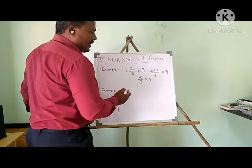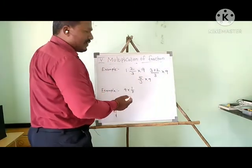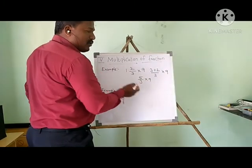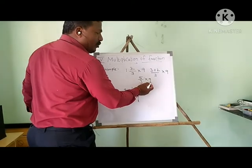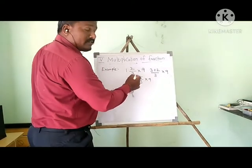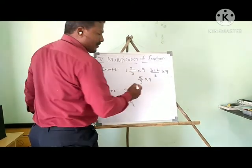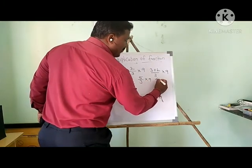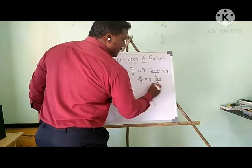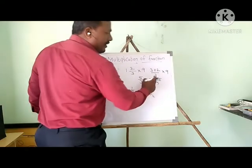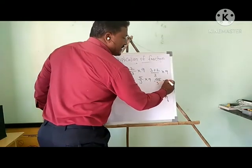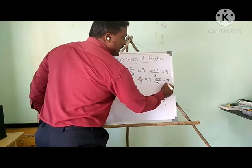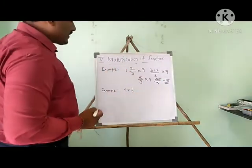Now it is an improper fraction. Here the whole number is 9 and this is the fraction 5/3. As per the rule, you multiply the whole number with the numerator: 9 × 5 = 45, over the denominator 3 as it is. If you divide 45 by 3, the answer is 15. So 15 is the product of the given fraction.